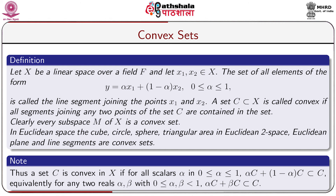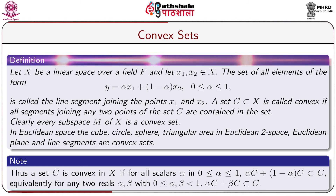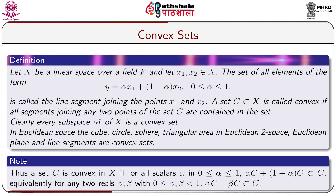We take a note: a set C is convex in X if for all scalars α with 0 ≤ α ≤ 1, αC + (1−α)C ⊆ C. Equivalently, for any two reals α, β with 0 ≤ α, β ≤ 1, αC + βC ⊆ C.